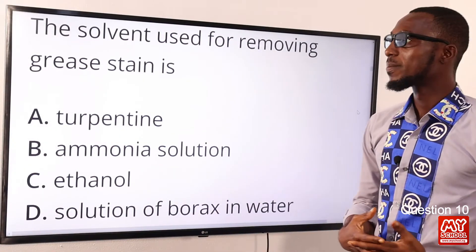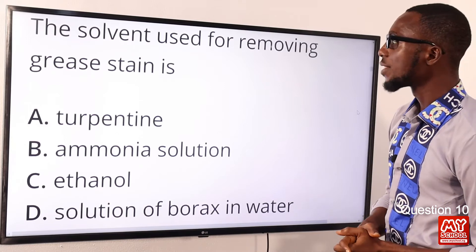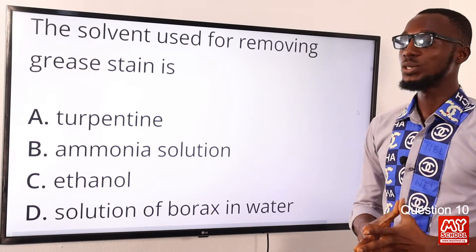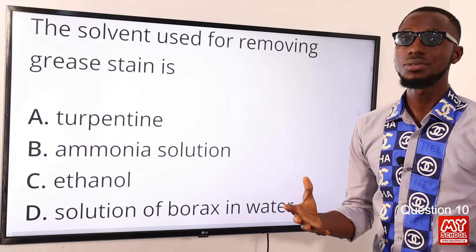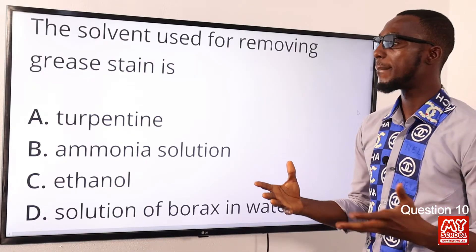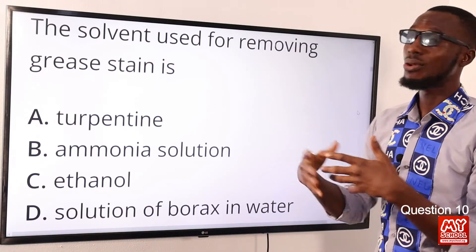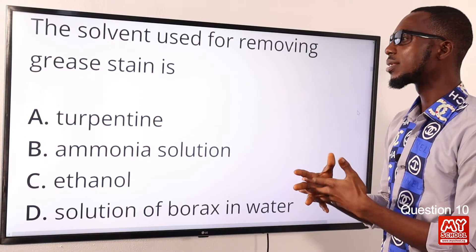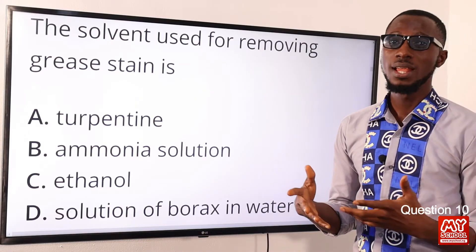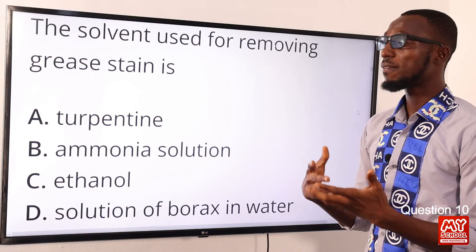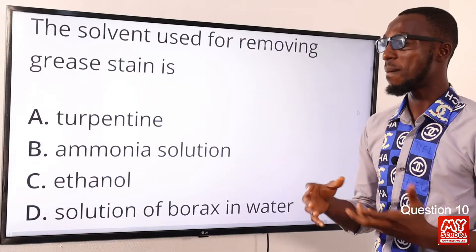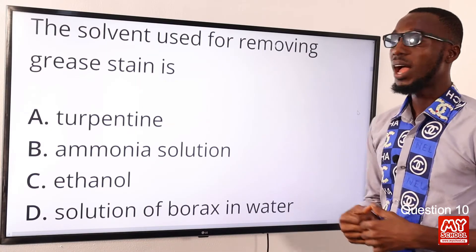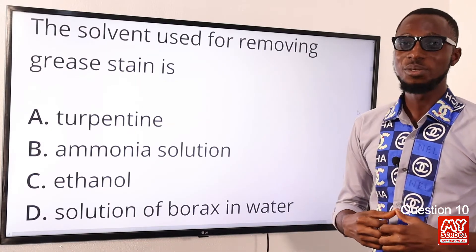Question ten: the solvent used for removing grease stains is what? It is ammonia. Ammonia can be used to remove grease stains and oil stains, and it can also be used for softening temporarily hard water. So the correct option is option B for ammonia solution.